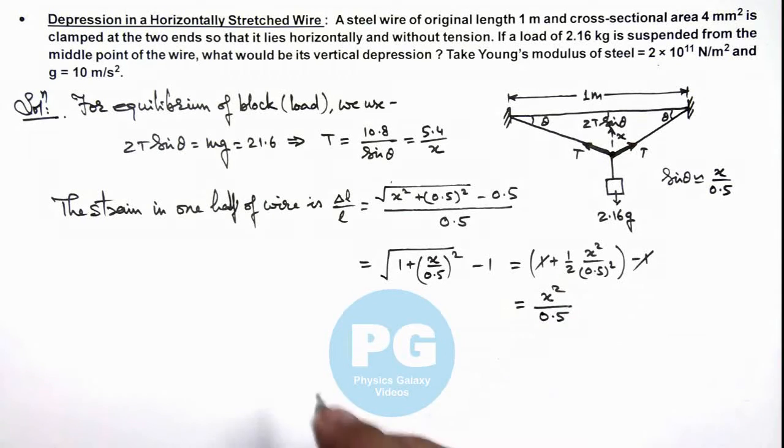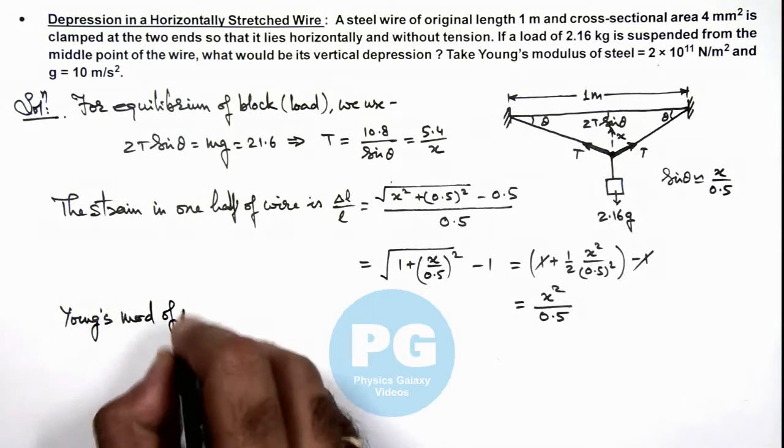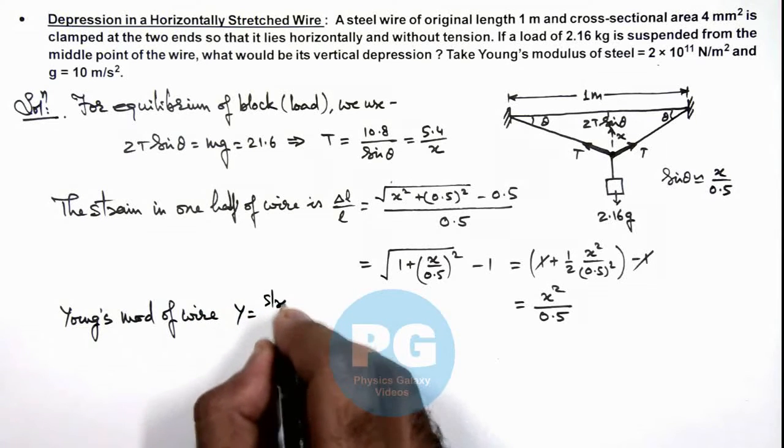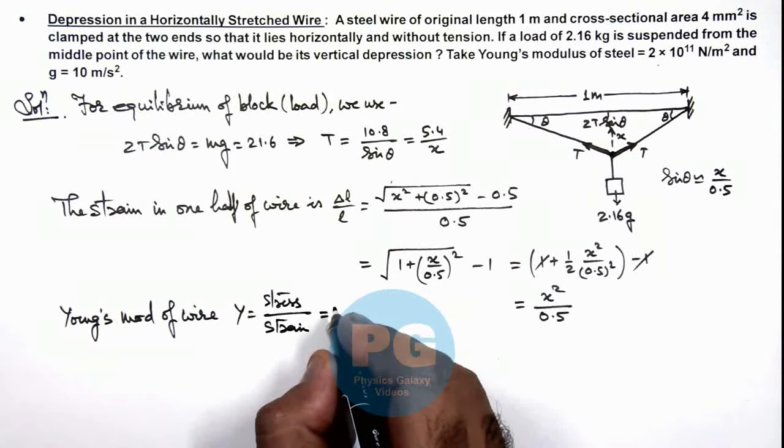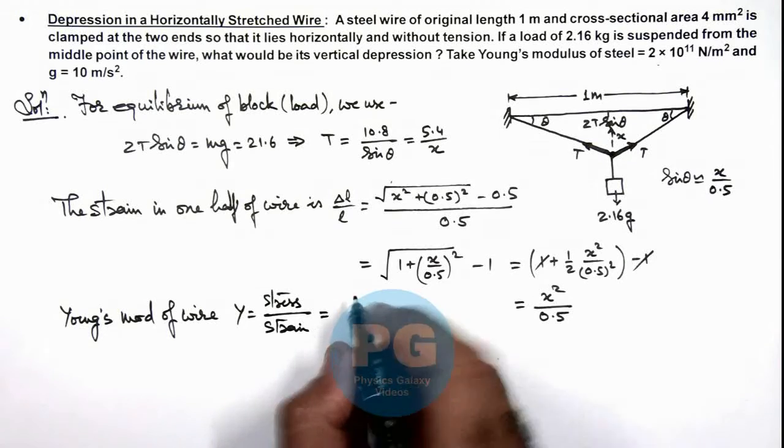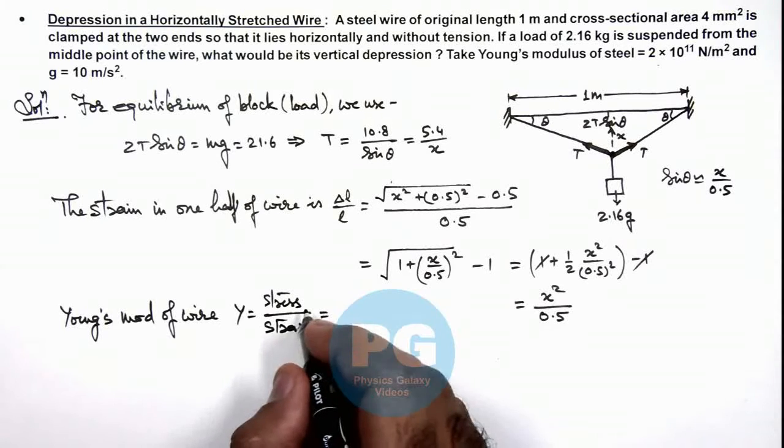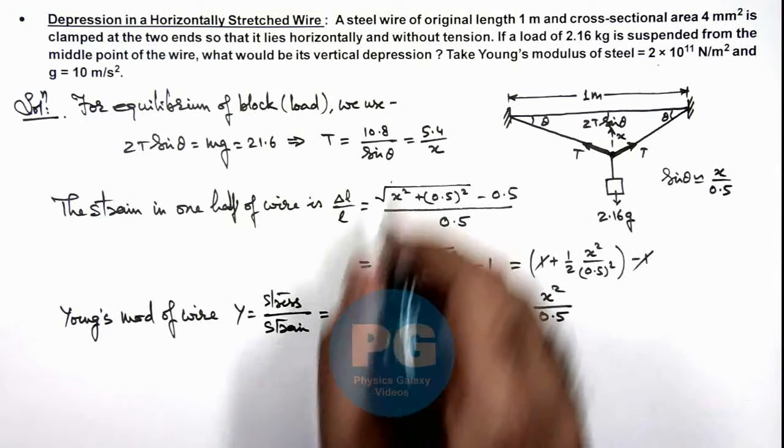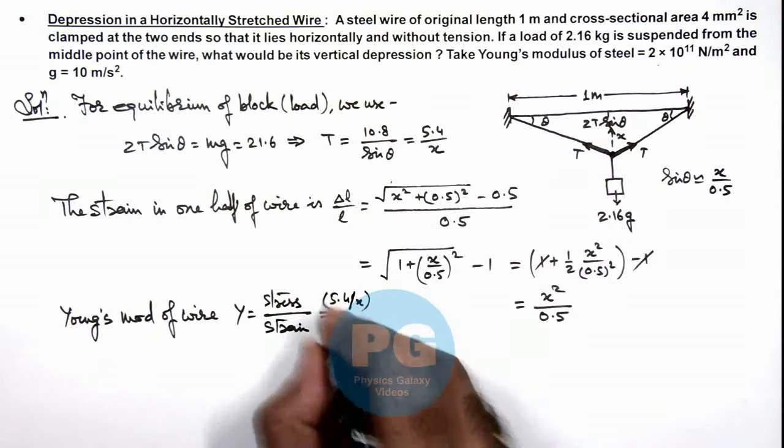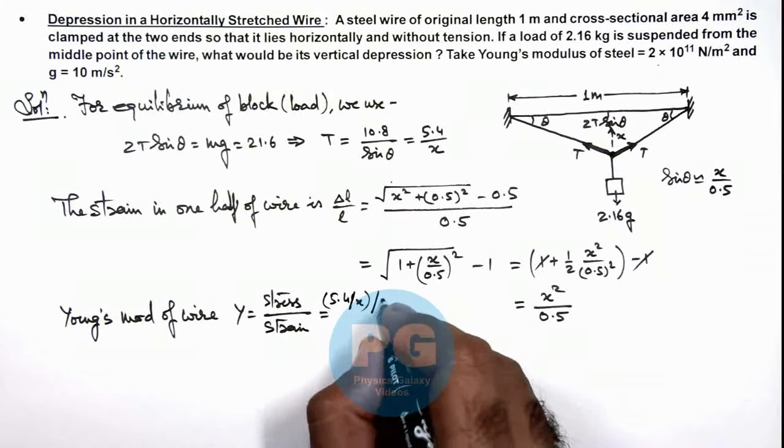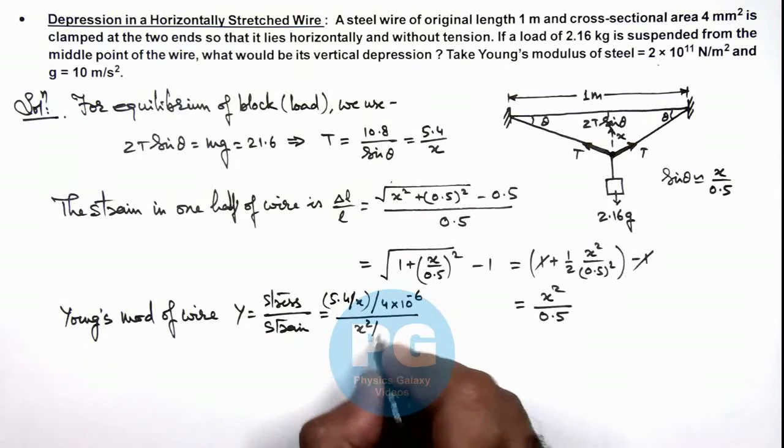As we have got the strain, we can write down the Young's modulus of wire. This can be given as stress by strain. So in this situation, stress is the tension divided by area. We are already provided with the cross-sectional area of wire, which is 4 mm square. So we can write it T is, we already calculated the tension as 5.4 divided by x, divided by the area which is 4 multiplied by 10 to power minus 6, divided by strain we are having x square by 0.5.